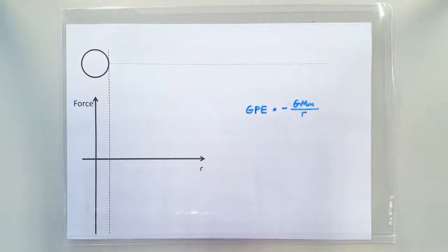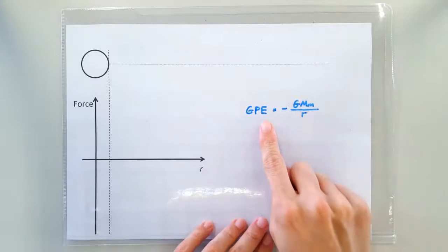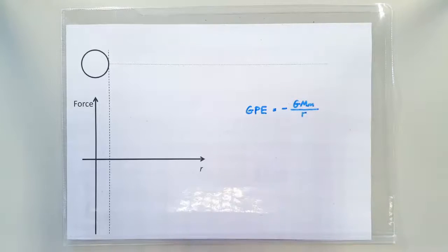Hello. In this video, I'm going to show you the derivation for the formula GPE equals negative GMM over R.